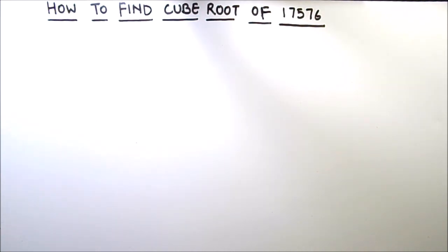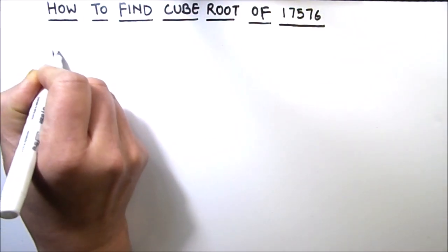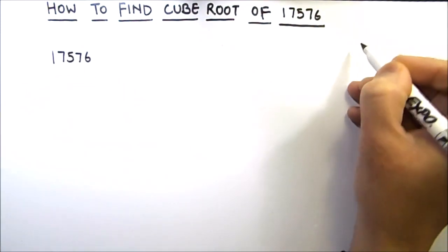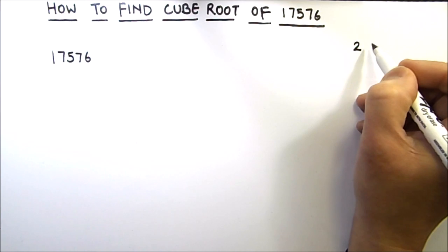In this method, we divide this number by prime numbers and write this number as the product of its factors to find the cube root. Let's start dividing this number by prime numbers. I am going to write a few prime numbers on this side of the board so that it will help us in our division.